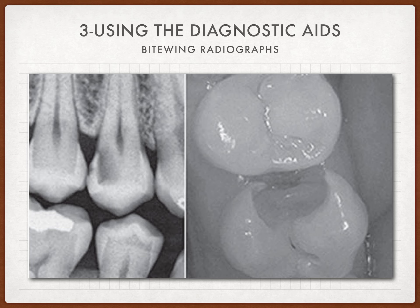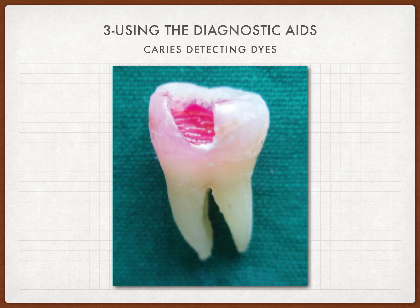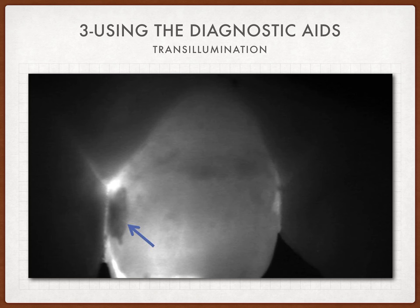The use of diagnostic aids includes radiographs — specifically bitewing radiographs, which are indispensable in the diagnosis of interproximal caries. We can also use caries-detecting dyes, and finally transillumination, which is a very useful method to examine teeth for fractures, craze lines, and caries.